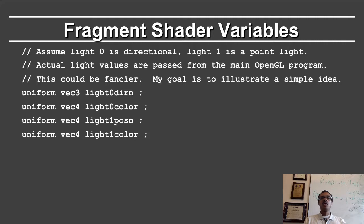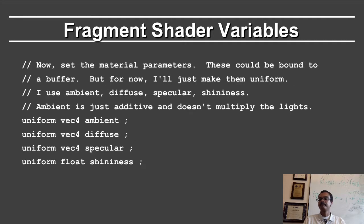In your Homework 2, you will have to generalize this and handle general numbers of lights. We also define the material parameters. In this case, they are uniform for the object, which is simply the ambient, diffuse, specular, and the shininess. Note that ambient, diffuse, and specular are RGBA colors, while shininess is a single value.